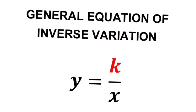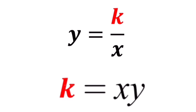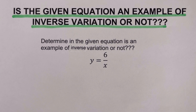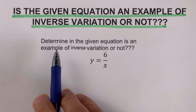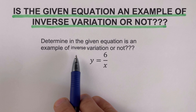We also remember that the general equation for an inverse variation is y equals k over x, where k is called the proportionality constant. So if we wanted to determine the constant of variation, or the proportionality constant k for an inverse variation, we can rearrange this equation as k equals xy.